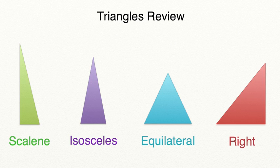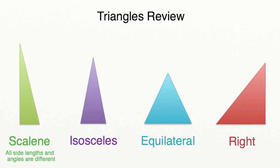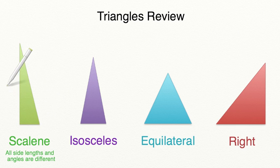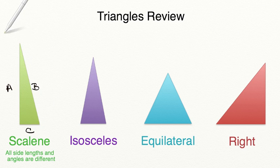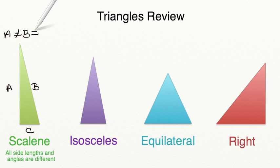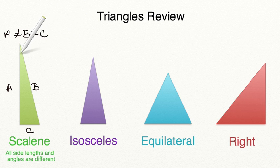We are going to begin by reviewing the four basic kinds of triangles: scalene, isosceles, equilateral, and right. Let's start with our scalene triangle. A scalene triangle has three side lengths that all have a different length and three angles that all have different measurements. So if we have side lengths A, B, and C, they are all going to have different measurements, which means side A is not equal to side B, which is not equal to side C. Our angles will also be different — angle one will be different from angle two and angle three.